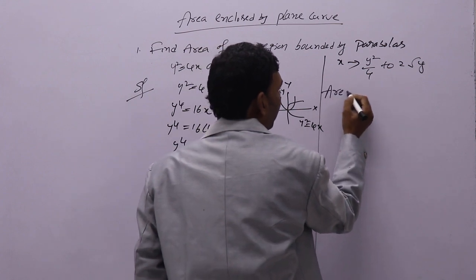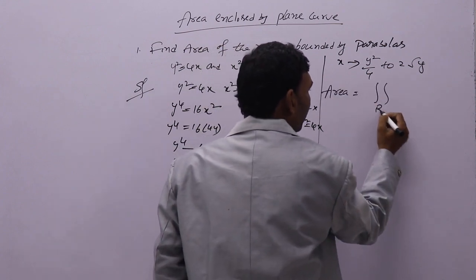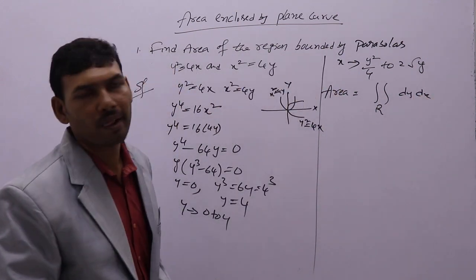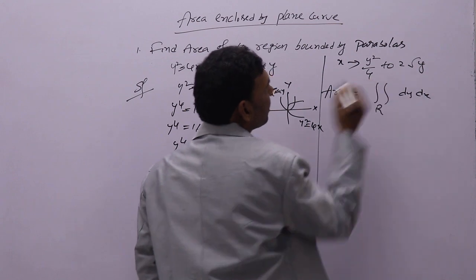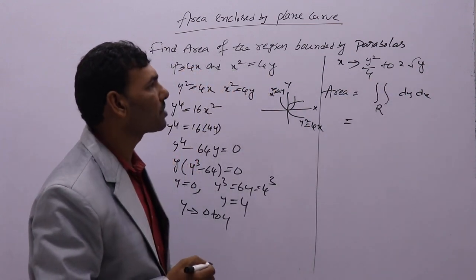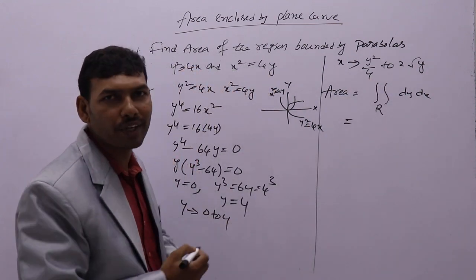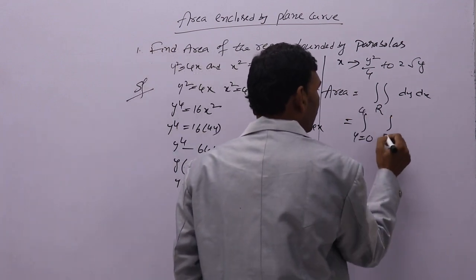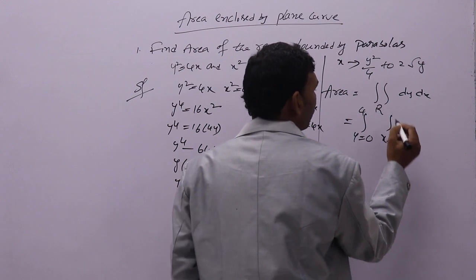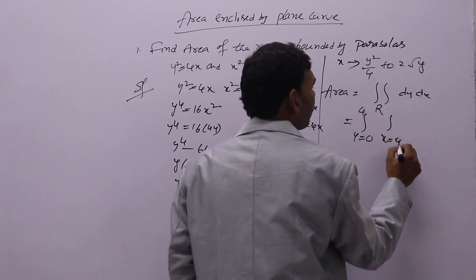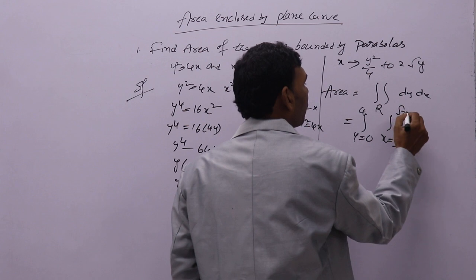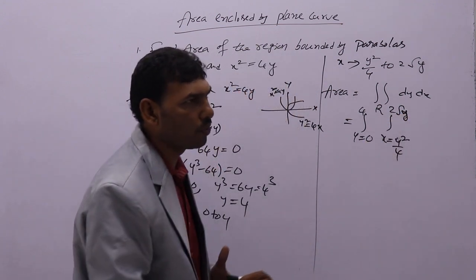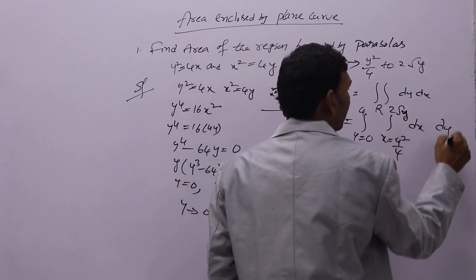Required area equals the double integral over the region, written as dx dy or dy dx. Since x limits are in terms of y, we first integrate with respect to x. The integral is: y from 0 to 4, x from y squared by 4 to 2 root y, of dx dy.